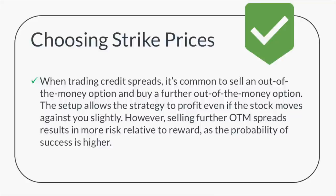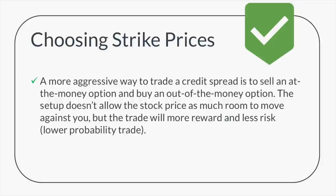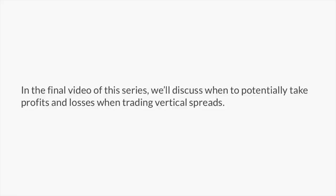To recap: when trading credit spreads, it's very common to sell an out-of-the-money option and buy a further out-of-the-money option — this allows the strategy to profit even if the stock price moves slightly against you. However, selling further out-of-the-money spreads results in more risk relative to reward since the probability of success is much higher. A more aggressive approach is to sell an at-the-money spread — sell an at-the-money option and buy an out-of-the-money option against it. This doesn't allow as much room for the stock price to move against you, but the trade has more reward and less risk, making it a lower-probability trade. In the final video of this series, we'll discuss when to take profits and losses when trading vertical spreads.